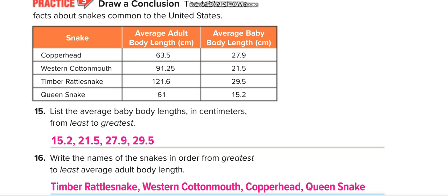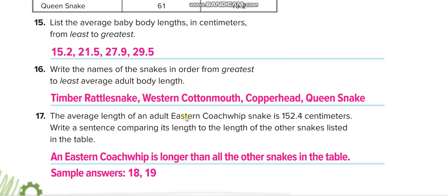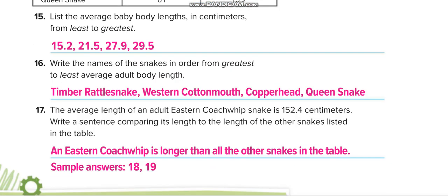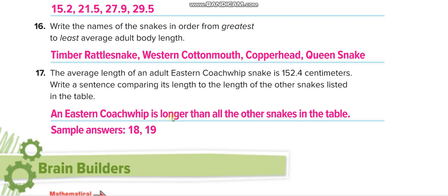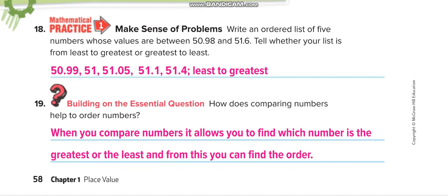Question 17: the average length of an adult eastern coachwhip snake is 152.4 centimeters. Write a sentence comparing its length to the other snakes in the table. Since 152.4 is greater than all the others, you write: 'An eastern coachwhip is longer than all the other snakes in the table.'